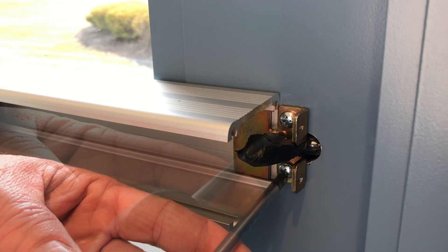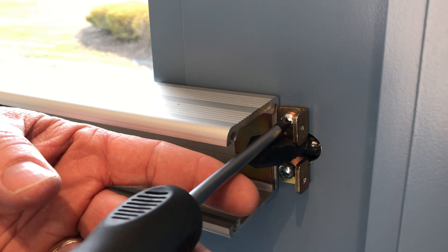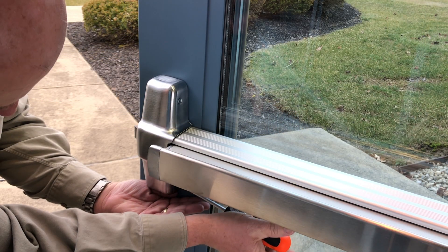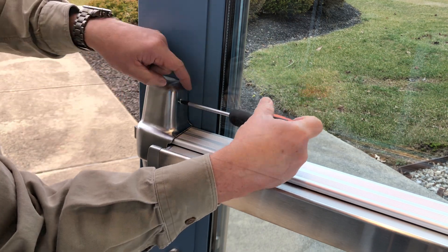To remove the exit device, loosen the two screws of the end cap bracket, but do not remove it. Remove the four screws from the center case cover.